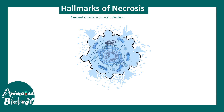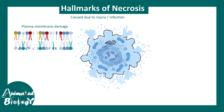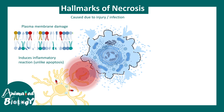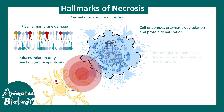Let us talk about some hallmarks of necrosis. One prominent hallmark is plasma membrane damage. Second, necrosis influences inflammatory responses, which are peculiar to necrosis and not found in apoptosis — so immune cells come into the picture and can evoke inflammation. The cell also undergoes enzymatic degradation and protein denaturation, and intracellular components such as lysosomes may leak out.